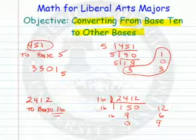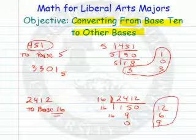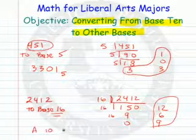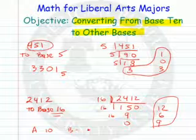And now we are at our answer. The answer would be 9, 6, 12. Well, now what's the 12 mean? Well, remember now, A was 10, B was 11, C was 12.